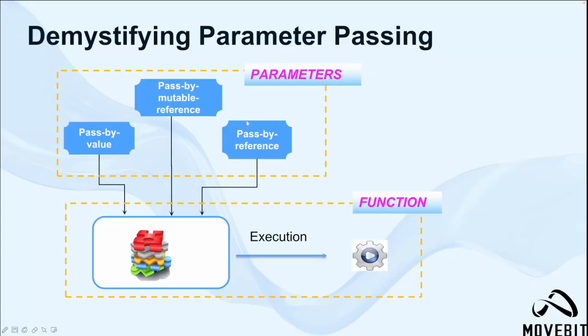Understanding the significance of parameter passing is essential as it enables functions to process values or objects within a program. This forms one of the fundamental means by which data traverses through a software application, moving from one function to another. Grasping how parameter passing operates can aid in coding more efficiently and accurately. In Sui Move, parameter passing generally employs three methods.